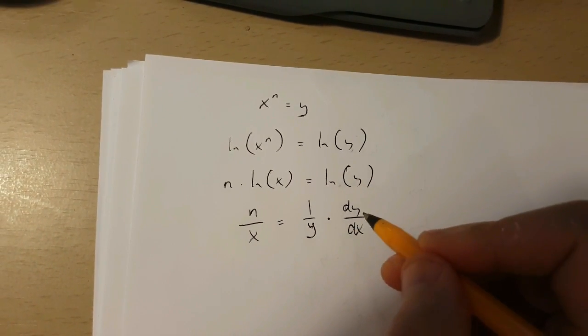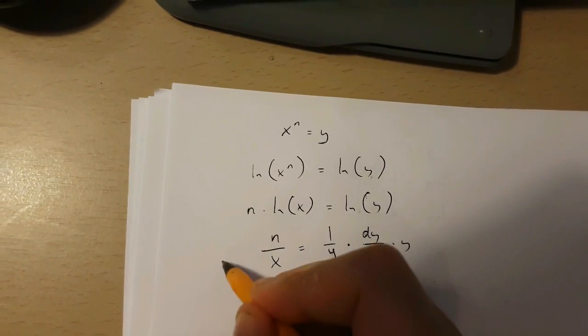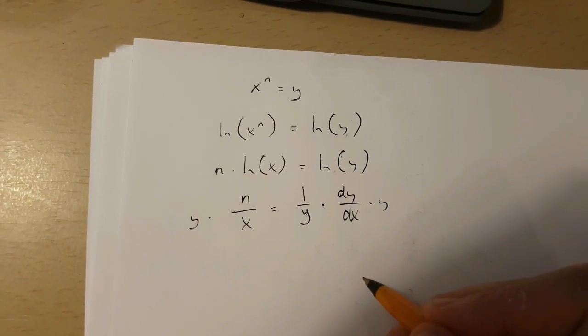Now if we want to isolate dy over dx, all we have to do is multiply both sides of this equation by y.